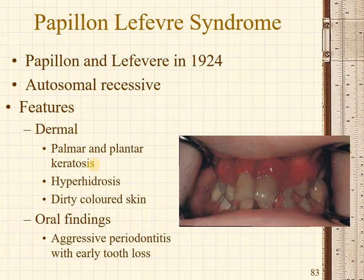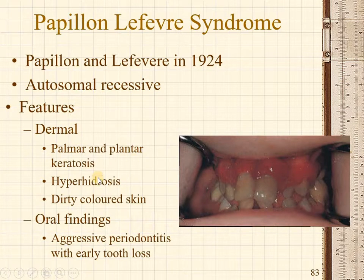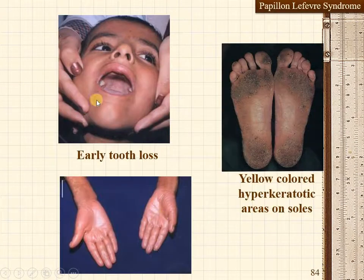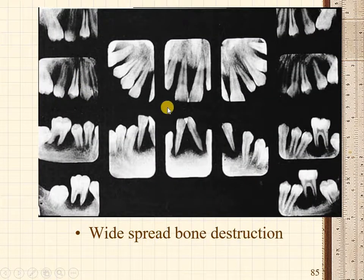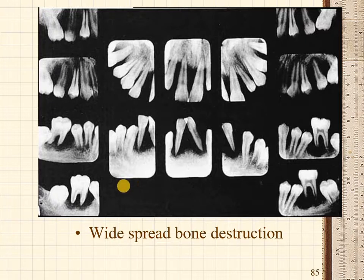Papillon-Lefebvre syndrome, named after its identifiers in 1924, is an autosomal recessive disorder with dermal and oral findings. The four main features are palmoplantar keratosis, hyperhidrosis (excessive sweating), dirty-colored bronzing of the skin, and aggressive periodontitis. There is very early loss of teeth in affected children, with widespread bone destruction and severe bone loss extending to the apical region. Complete bone loss can be seen in the molars. This syndrome should be kept in mind in cases of periodontitis.